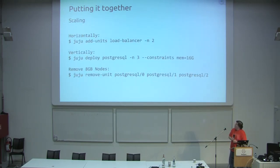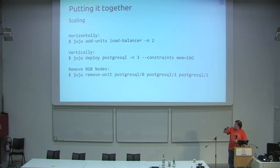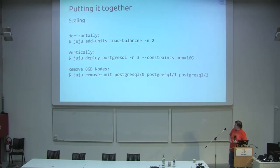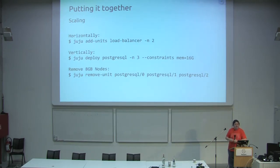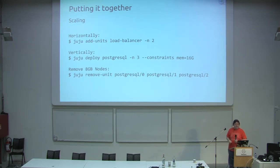One of the benefits of this is that we can scale in two different ways. Horizontally, we can just say add more units — there's a peer relation between each machine of the same application so they can exchange information, making sure one is the master and another is a failover for high availability. We could also say these Postgres servers need more RAM — instead of having to destroy, redeploy, back up, and restore, you deploy three more machines with 16 gigs of RAM, and once those come up and clustering syncs, then you remove the lower three machines with 8 gigs, and you're there with your upgraded server cluster.